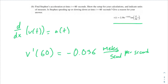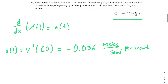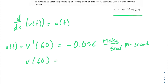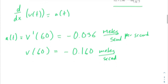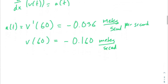You might be tempted to say that since acceleration is negative, Stephen is slowing down — but not necessarily. We still have to check the velocity at t equals 60 seconds and compare the two signs. v of 60 is negative 0.160 meters per second. The two signs are equal — both negative — so that means Stephen is actually speeding up.